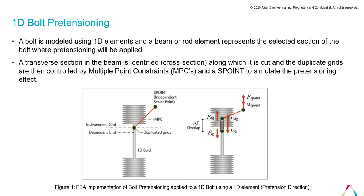Now let us look at 1D Bolt Pretension, which follows a specific approach for the bolt pretension phenomenon. In 1D Bolt Pretension, the bolt is modeled using 1D elements, and a beam or rod element represents the section of the bolt where pretension will be applied. It is recognized that for a straight bolt, from the viewpoint of force balance, it does not matter where the material removal happens in the bolt. Therefore, instead of simulating the precise interaction between the nut and bolt, pretension is handled within the length of the bolt.